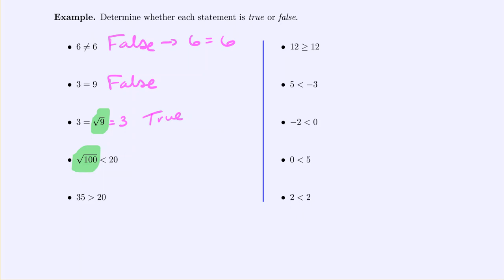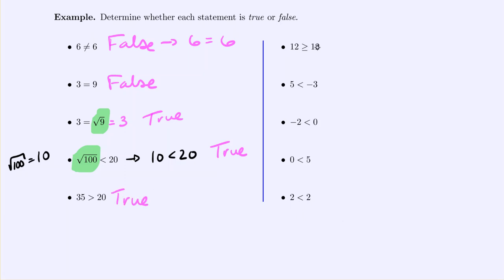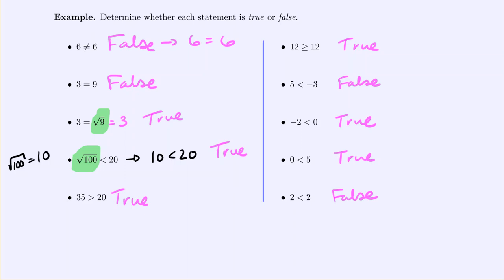The square root of 100 ≤ 20: typing into the calculator, the square root of 100 is 10, so this is really '10 is less than 20' — true. 35 > 20 — true. 12 ≤ 12 is true because of the 'or equal to' symbol. Is 5 < negative 3? False — every negative number is smaller than any positive number. Is negative 2 < 0? True. Is 0 < 5? True. Is 2 < 2? False — 2 equals 2, and to be 'less than' means strictly less than.